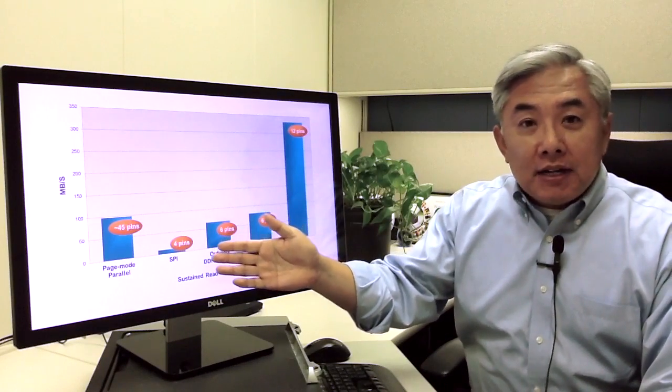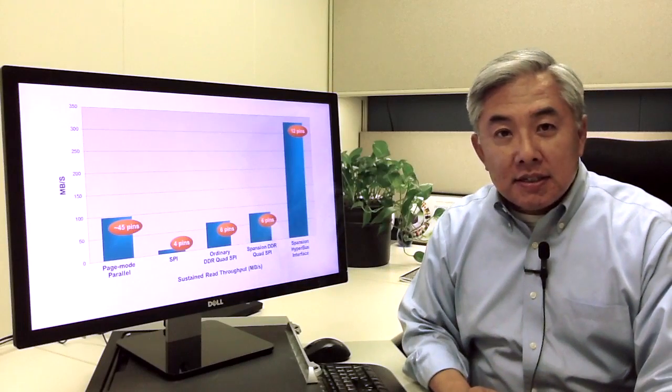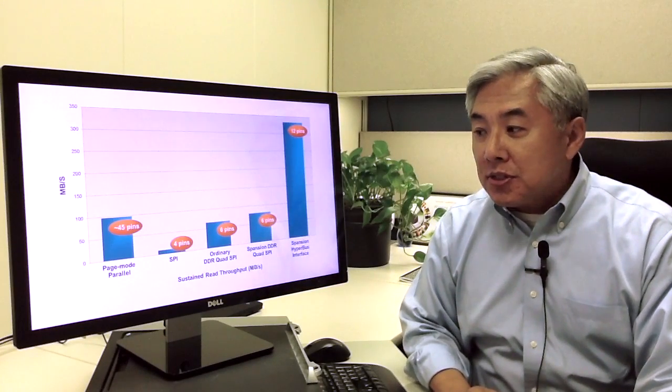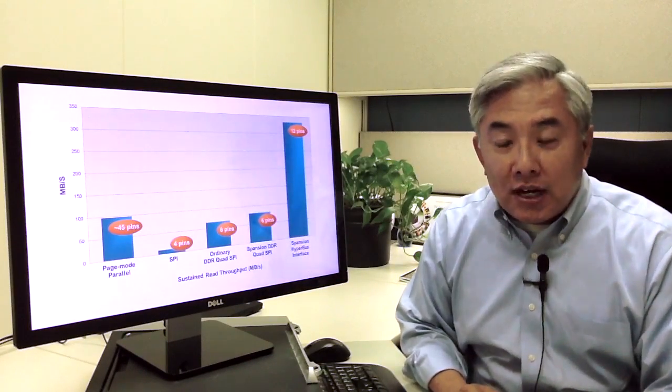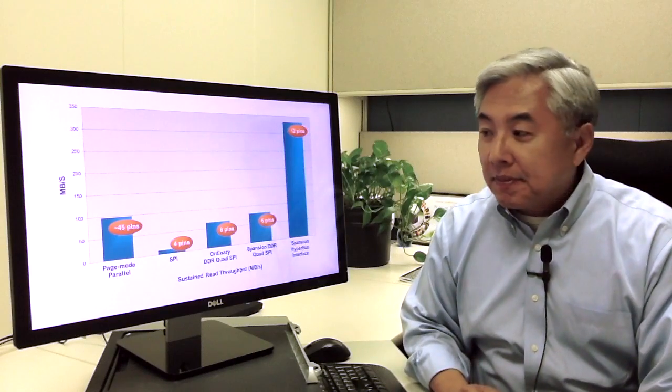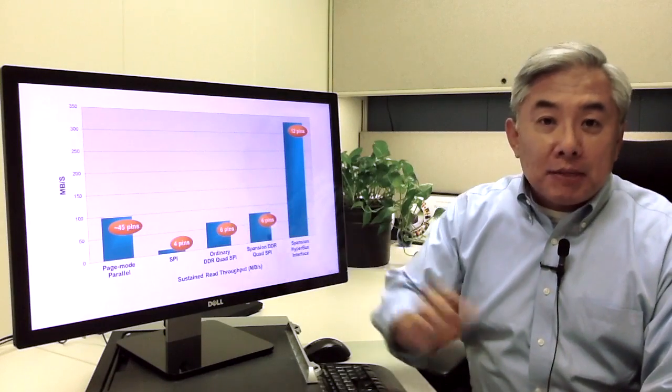We see next the SPI device, this is a single channel SPI device. It consists of 4 pins for transactions. So the pin count is low. However, the performance is low as well. It's in the order of 10 megabytes per second.